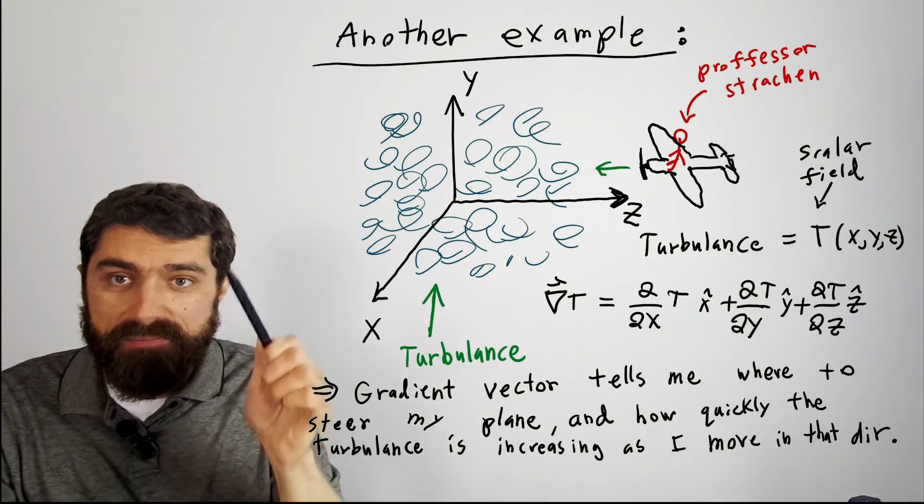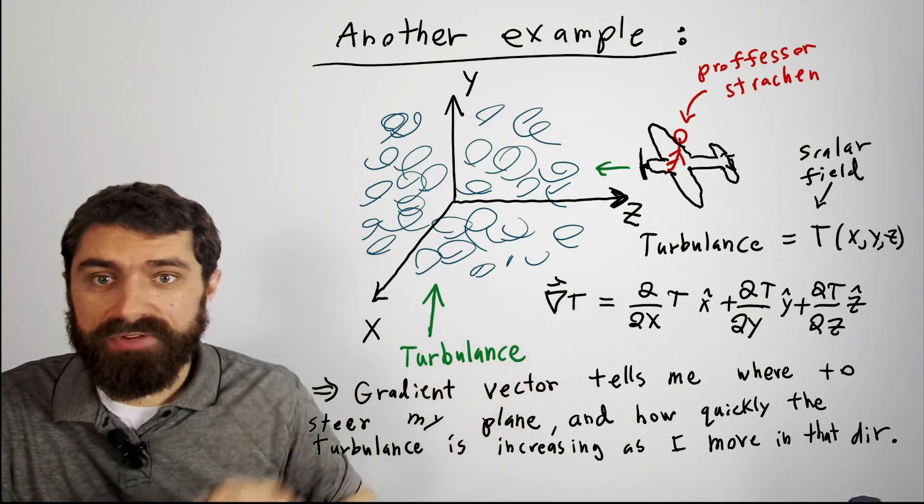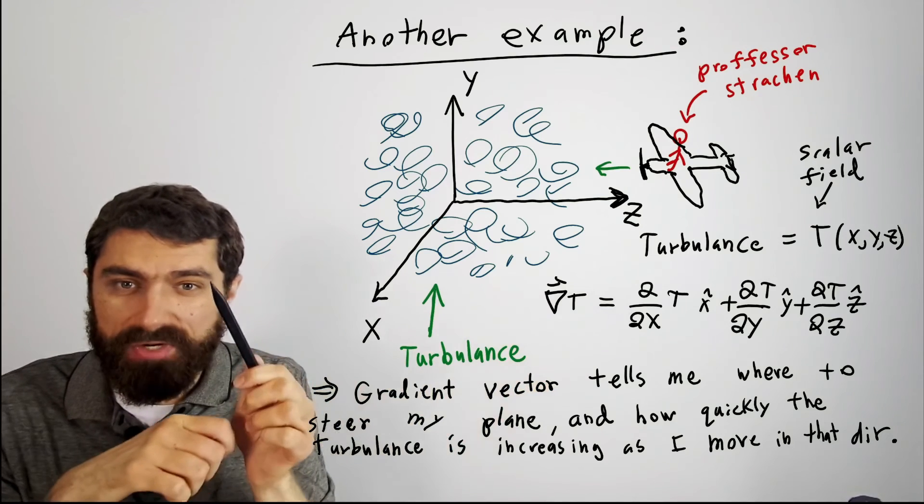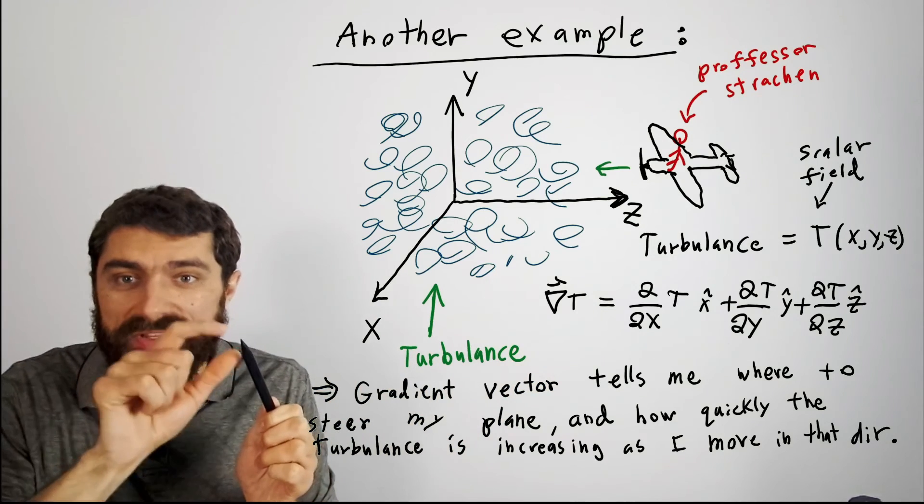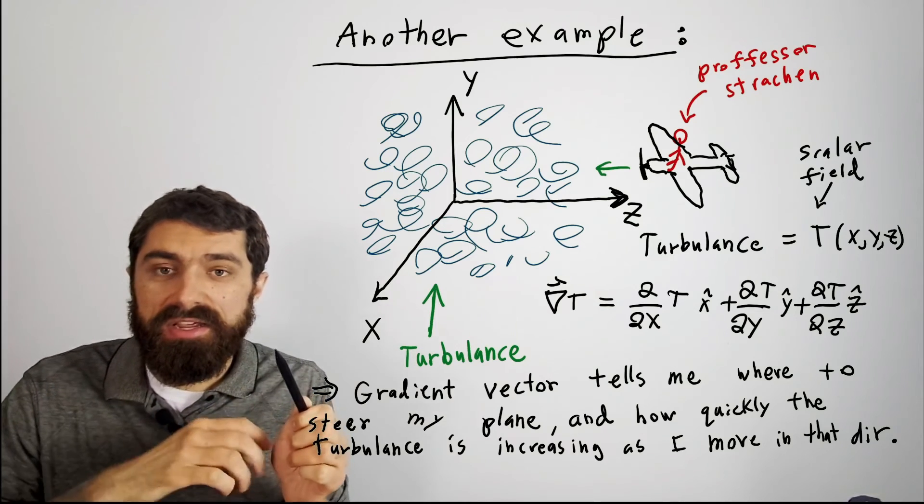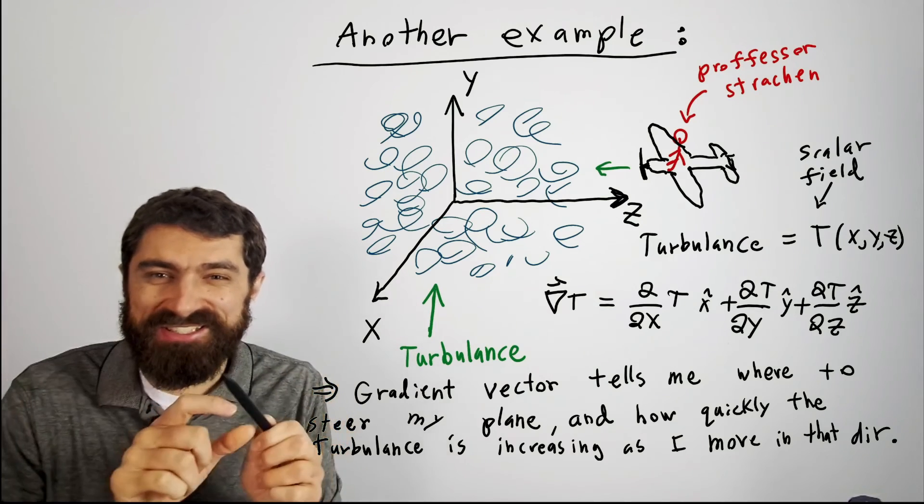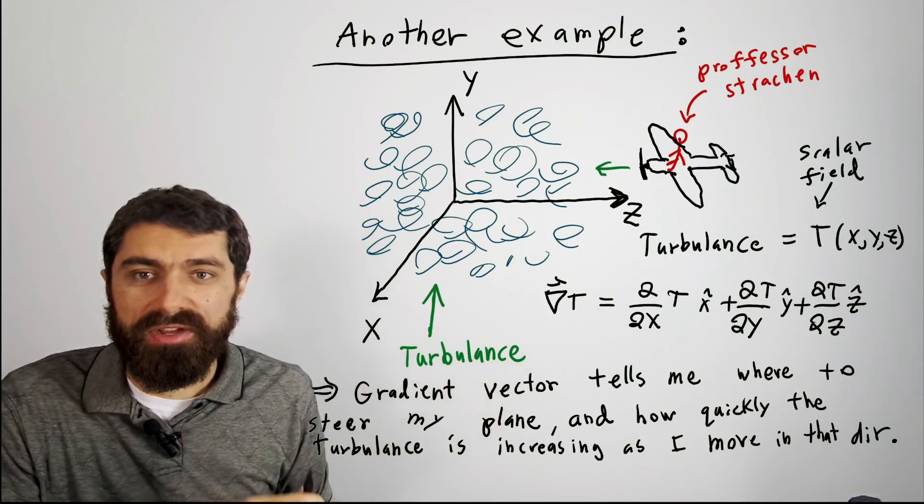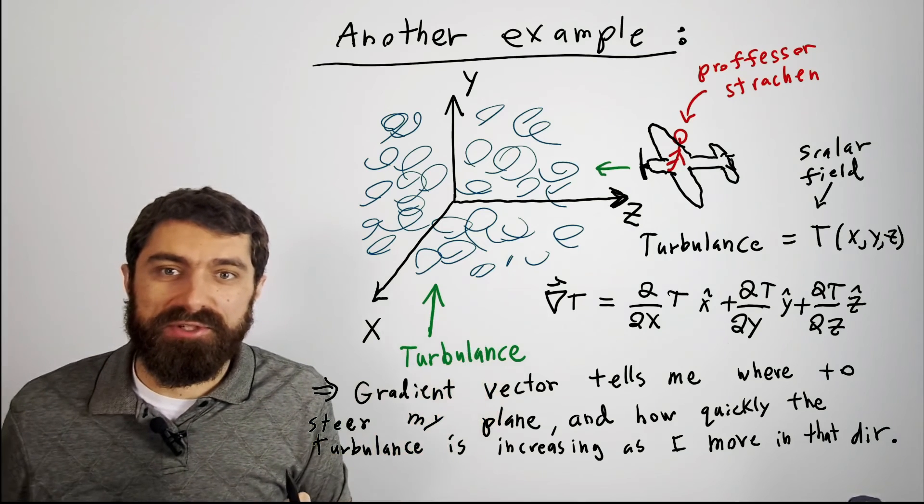And the magnitude of that vector, that gradient vector would tell me how quickly does the turbulence increase as I move in that direction. So if I moved a meter or just a short distance, the turbulence would increase by just a little bit. And it would tell me the rate of change of that turbulence.